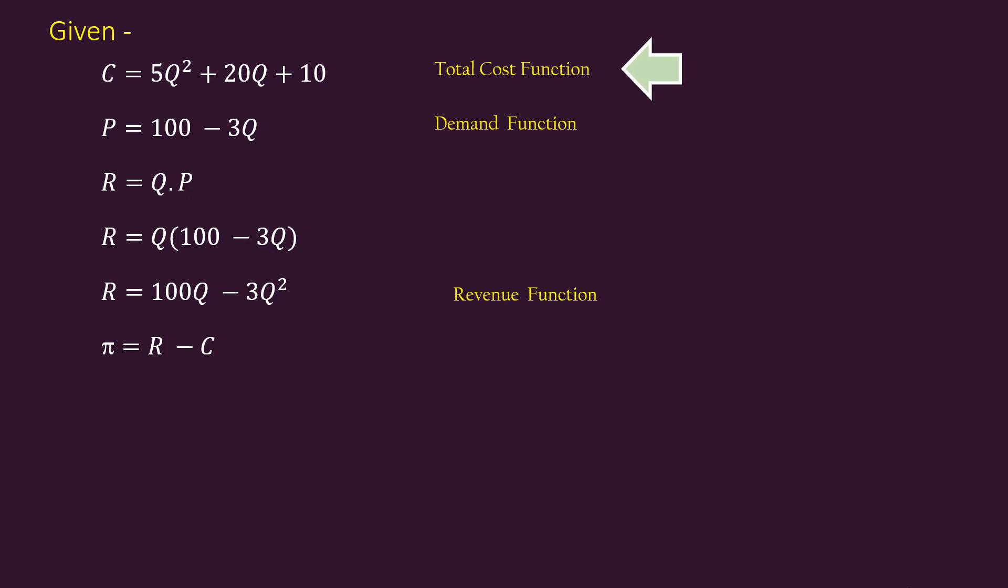Using these two functions, we can find the profit function. It is π equal to 100Q minus 3Q squared minus 5Q squared plus 20Q plus 10.